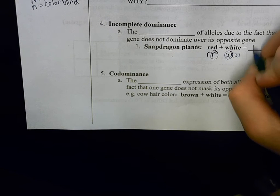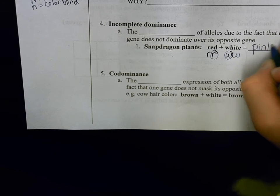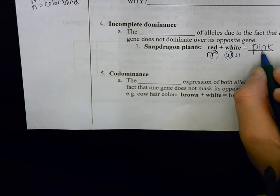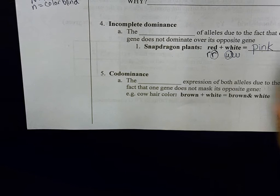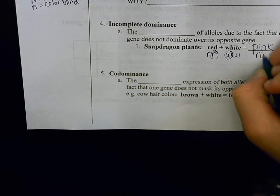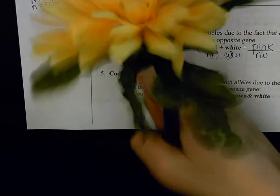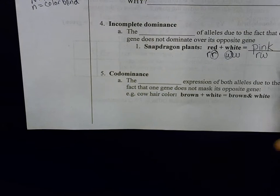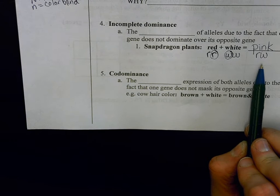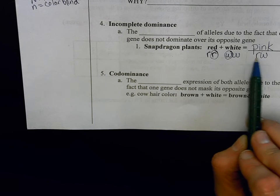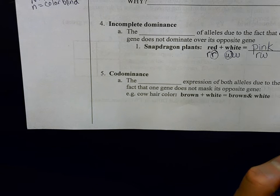The white-flowered parent would pass one of its little w's, and you would get a blended phenotype of red and white combining to make pink, which is shown with the genotype rw. Anytime you're using incomplete dominance, you should always use all lowercase letters, and if you have two different lowercase letters together, you should mix or blend those features.